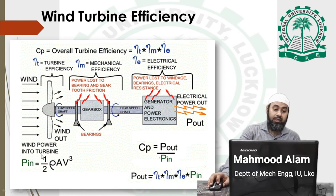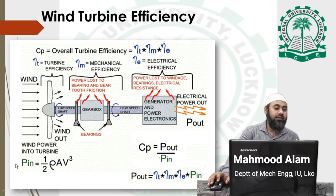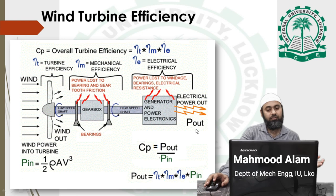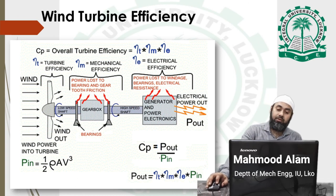As we know, the power in wind is given by P = ½ρAV³, where ρ is the density of air, A is the cross-sectional area of the wind blade on which air strikes, and V is the velocity of wind. This gives the total power in the wind, as discussed in the previous lecture. The overall efficiency Cp can be calculated as P_out divided by P_in — the ratio of total power output from the system to the power available in the wind.